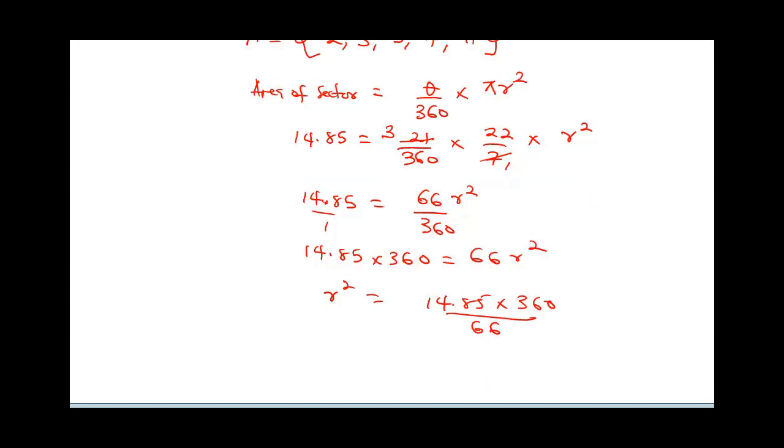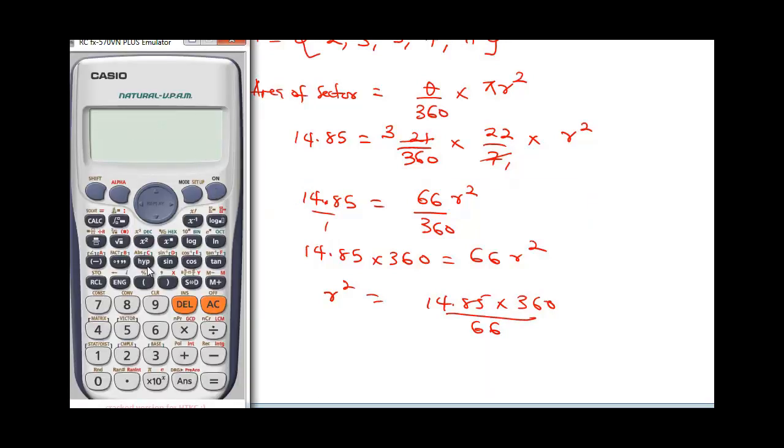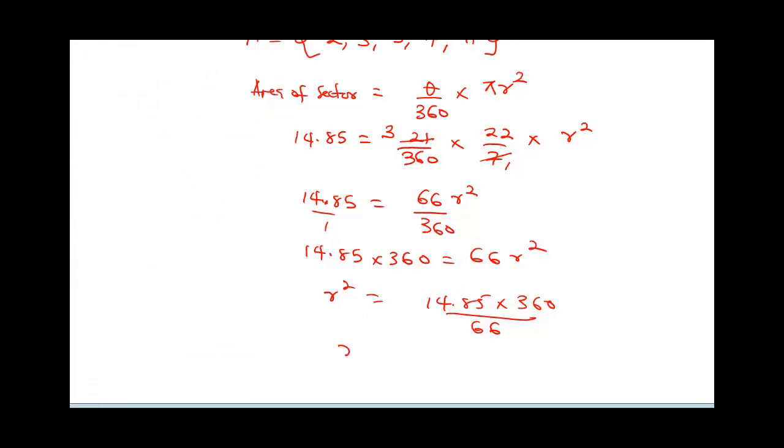Let's bring in our calculator so we can punch this. This is going to be 14.85 times 360, divided by 66. So our R squared is equal to 81. Therefore our R is going to be square root of 81, and that's going to give us 9.